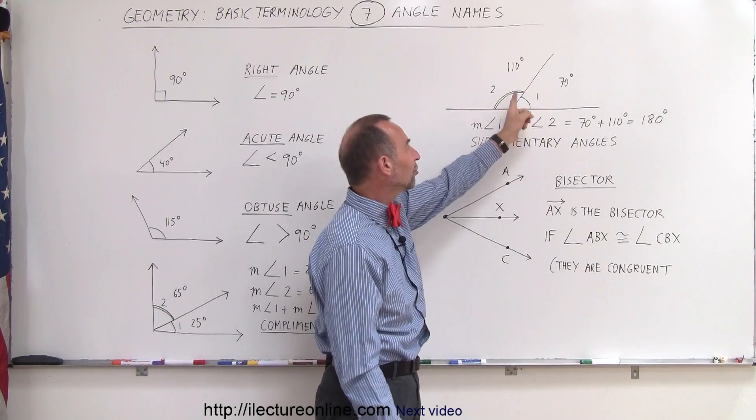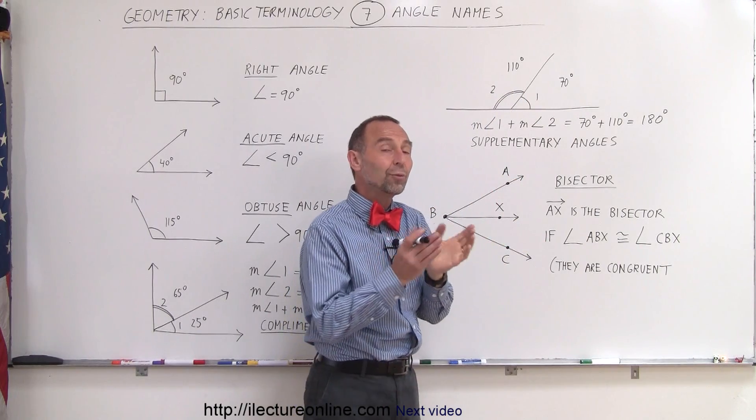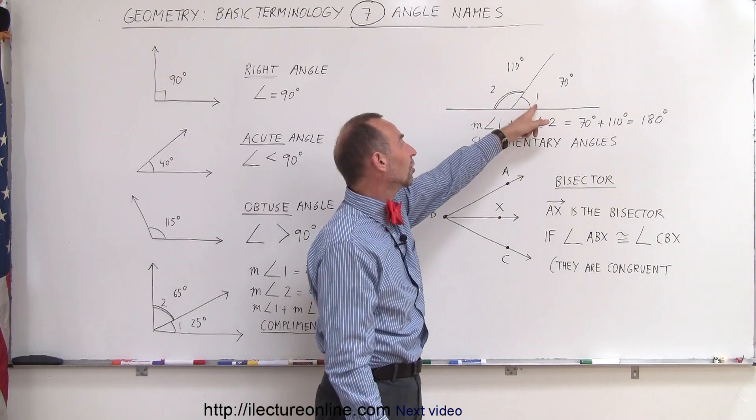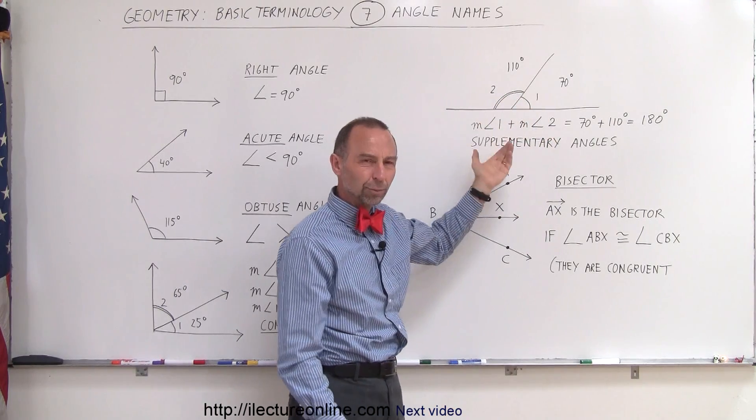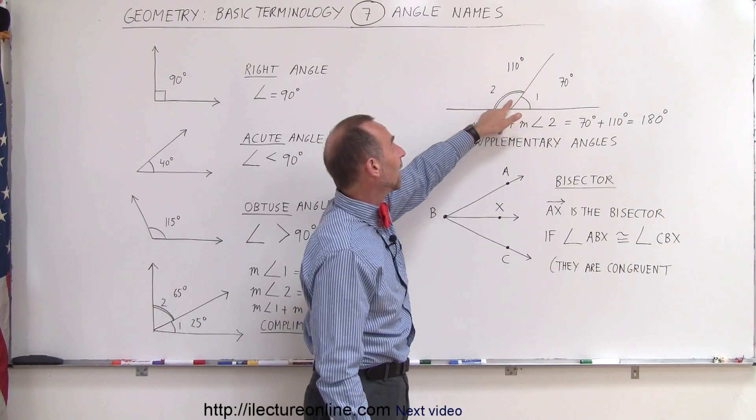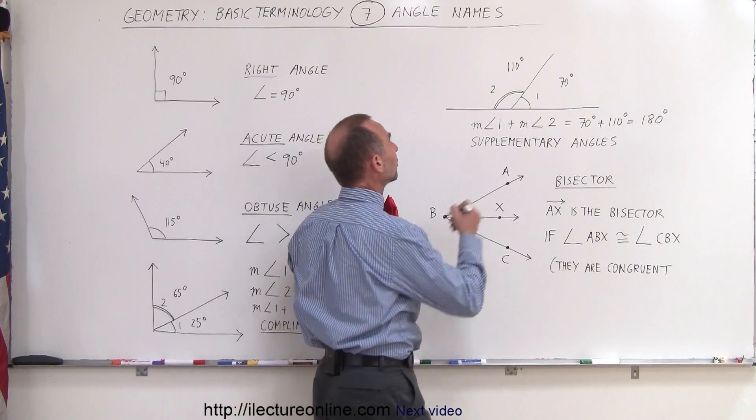Also, notice that I have a single arc for angle 1 and a double arc for angle 2. We quite often, when we have two angles or more than one angle, we mark them by having a single arc, a double arc, a triple arc, a quadruple arc, to indicate that they have different measures. So here we have angle 1 and angle 2. Together, they add up to 180 degrees. So those are called supplementary angles.